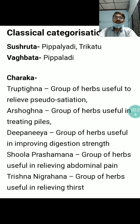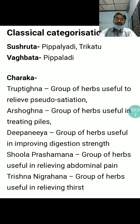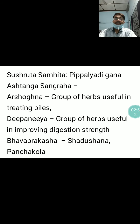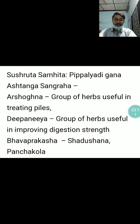Charaka also lists it under Arshughna Mahakashaya — group of herbs useful in treating piles or hemorrhoids; Deepaniya Mahakashaya — group of herbs useful in improving digestion strength; Shula Prashamana Mahakashaya — group of herbs useful in relieving abdominal pain; and Trishnanigrahana — group of herbs useful in relieving thirst. Ashtanga Sangraha has mentioned it under Arshughna Gana, Shula Prashamana, and Deepa Dhyaniya Gana. Bhavaprakasha has mentioned it under Shadushana and Panchakolak.